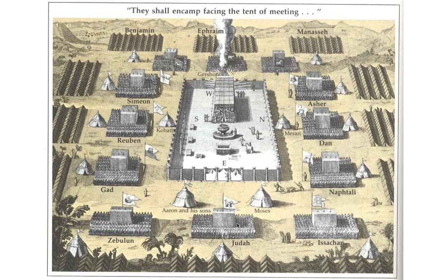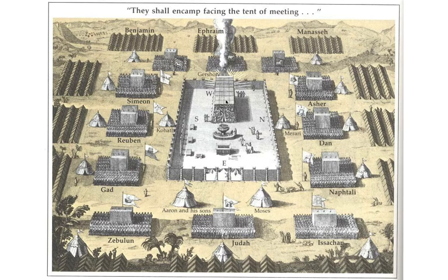Here's an overhead view. Here's the courtyard around the Mishkan, the brass altar, the brass laver, and then the Mishkan itself with everything gold inside. This artist has visualized, as the text says, each tribe of Israel organized by tribe, kind of like the points of a clock, surrounding the most important thing — the Mishkan. And the most important thing in the Mishkan is the Ark of the Covenant.